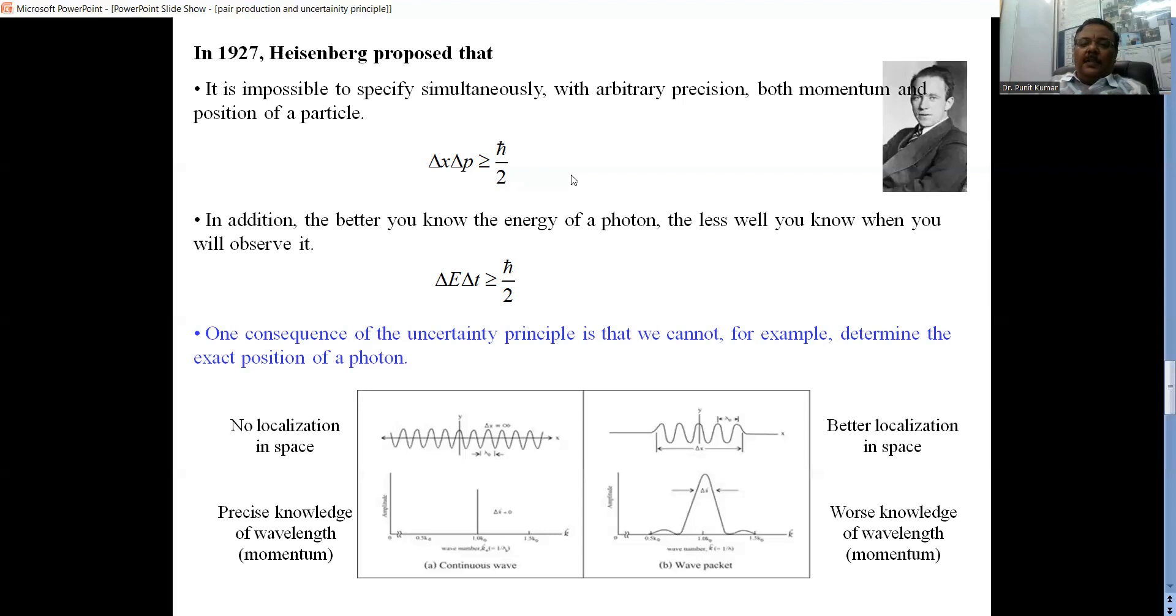The consequence is that we cannot determine the position of a photon precisely at a particular instant. We can only talk in terms of uncertainty. The position of a particle is not exactly known. We are talking in terms of uncertainty, which means the position is in terms of a probability. There is a definite probability of finding the particle at a particular place at a particular time.